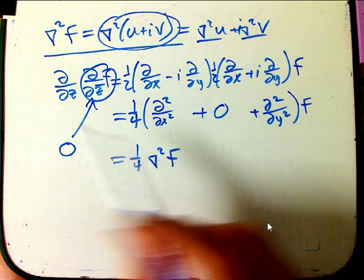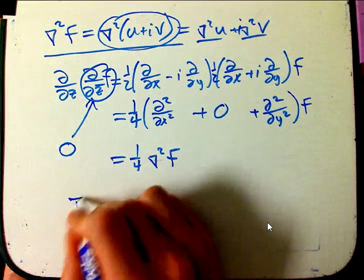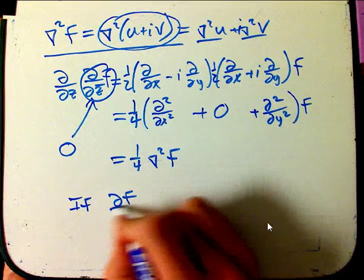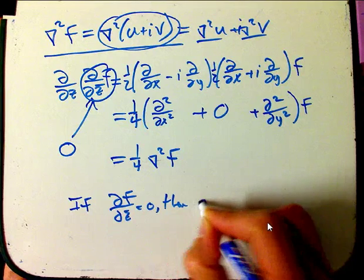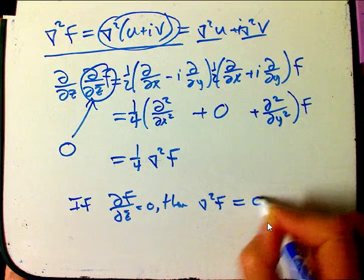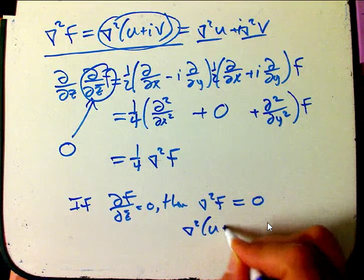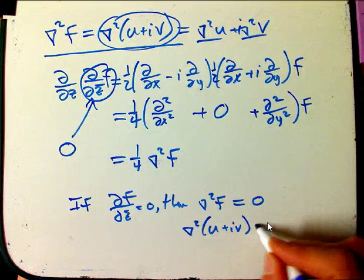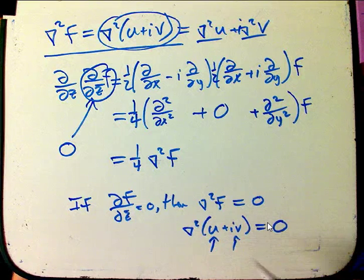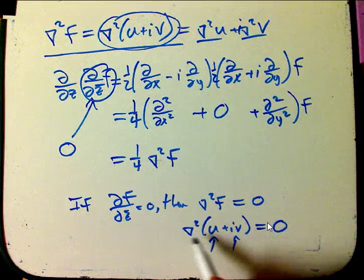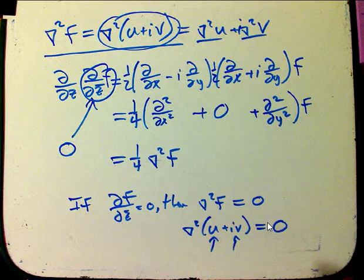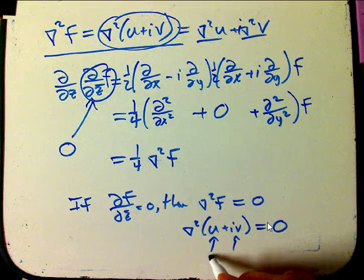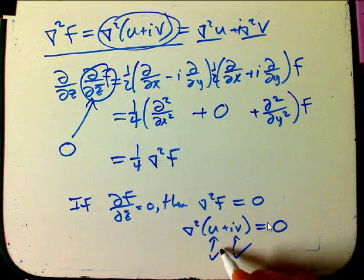So, if df by dz bar equals zero, then the Laplacian is zero. And that's just a nice shorthand, if you will, for these guys both individually being harmonic, real valued functions, then put together separately as a real and imaginary part of a function. So, these are both separately harmonic functions.